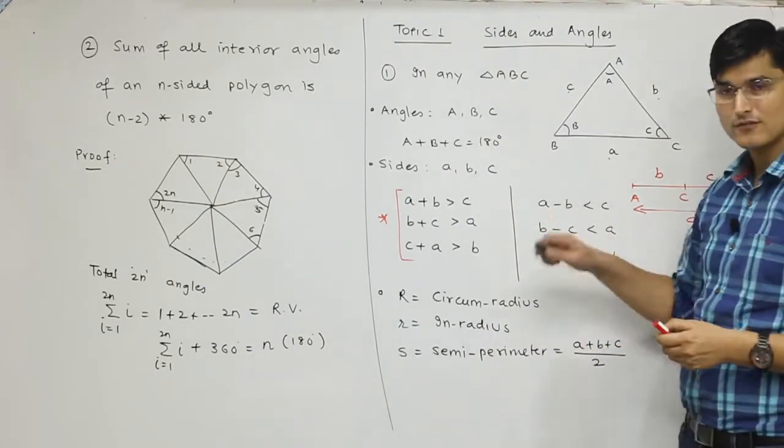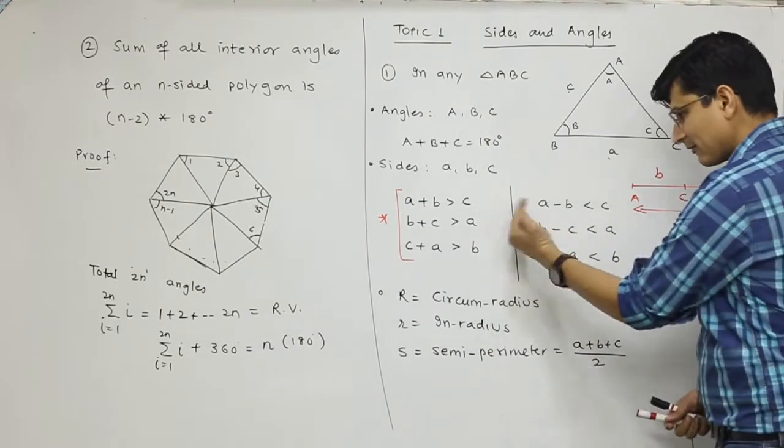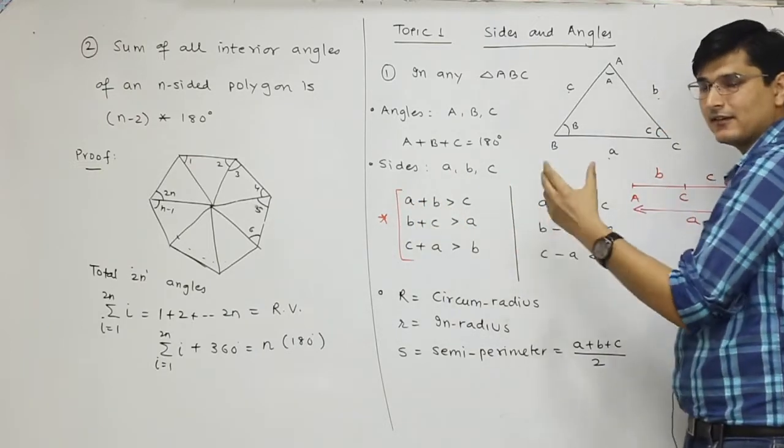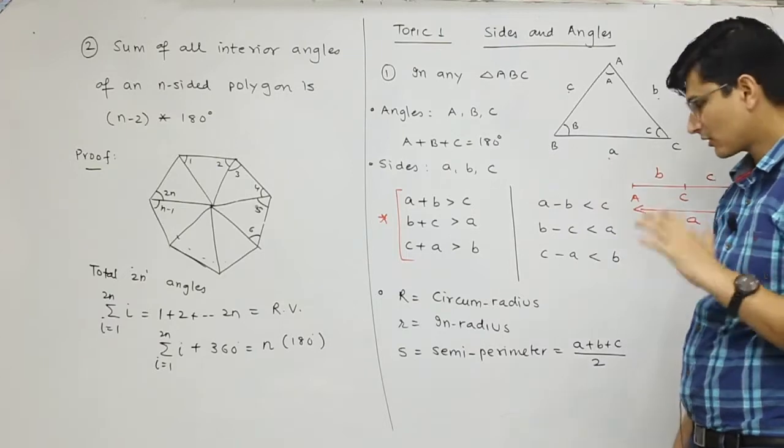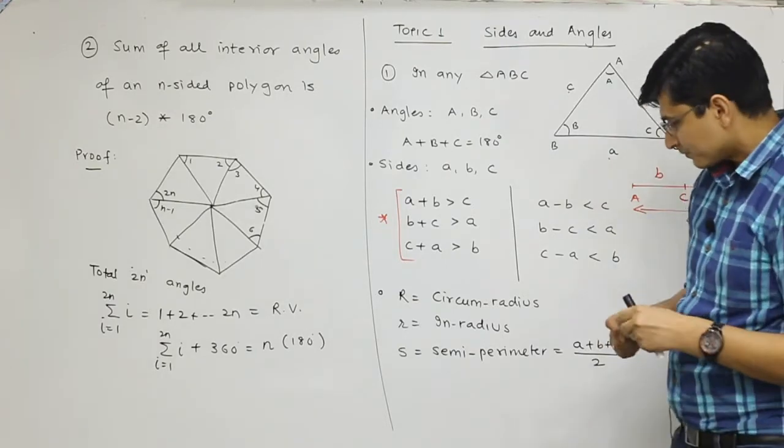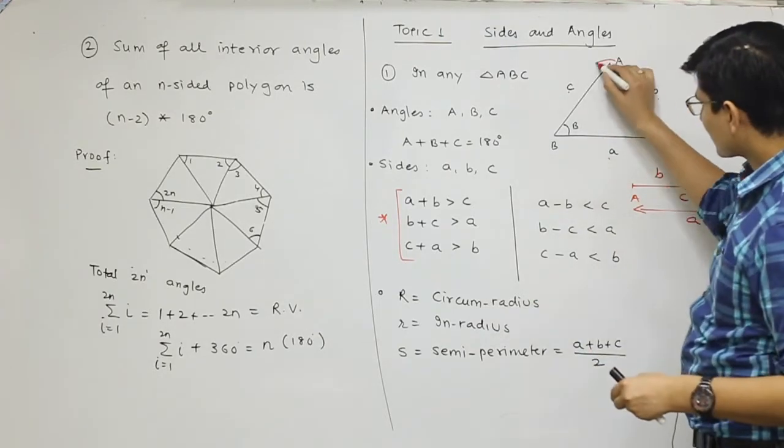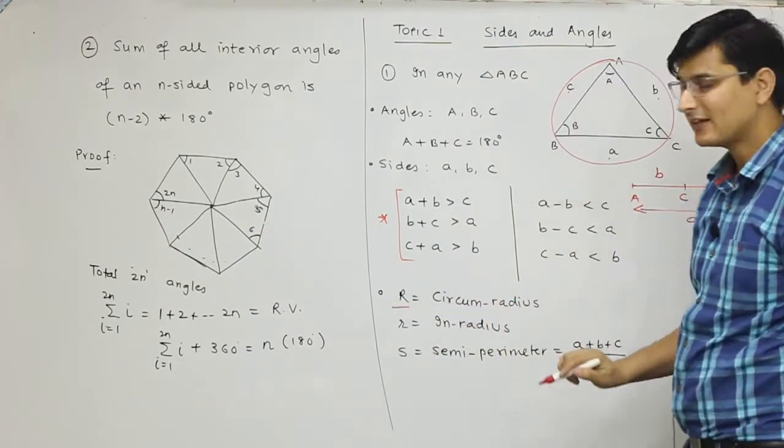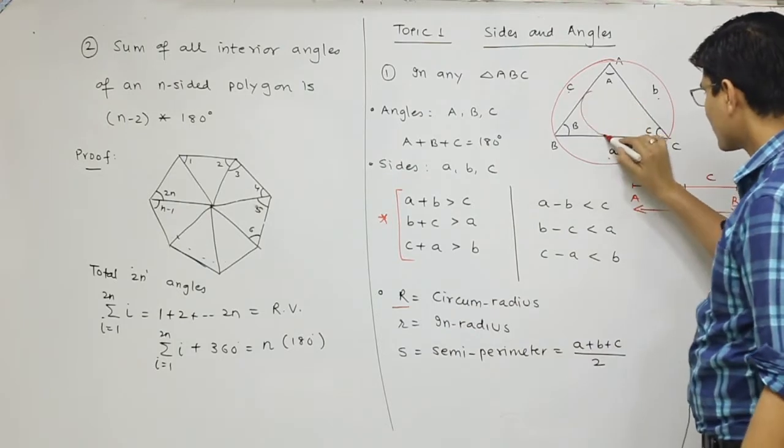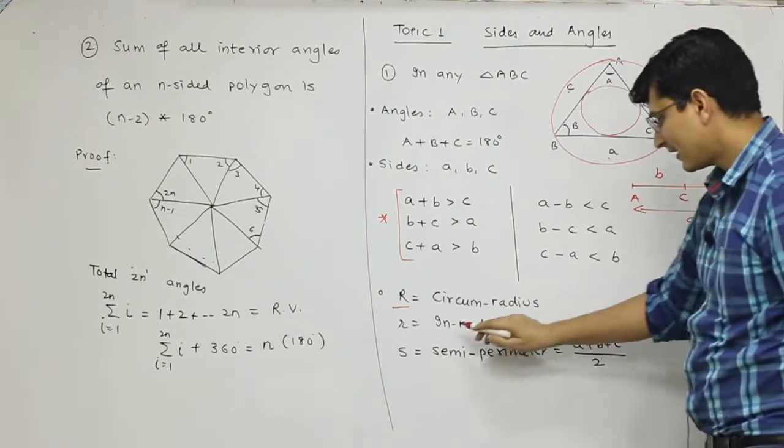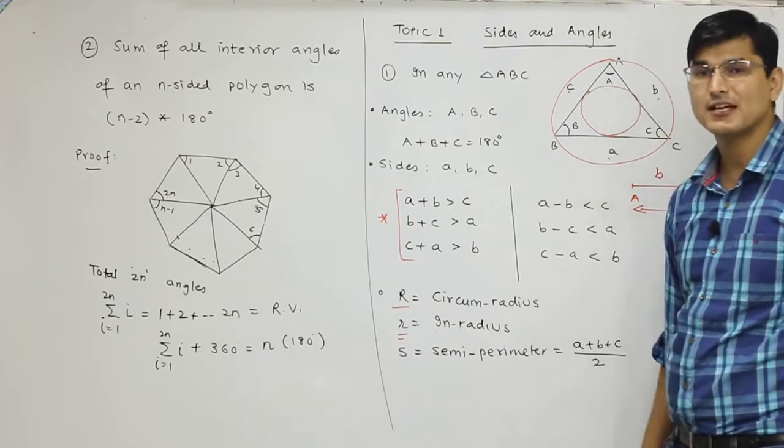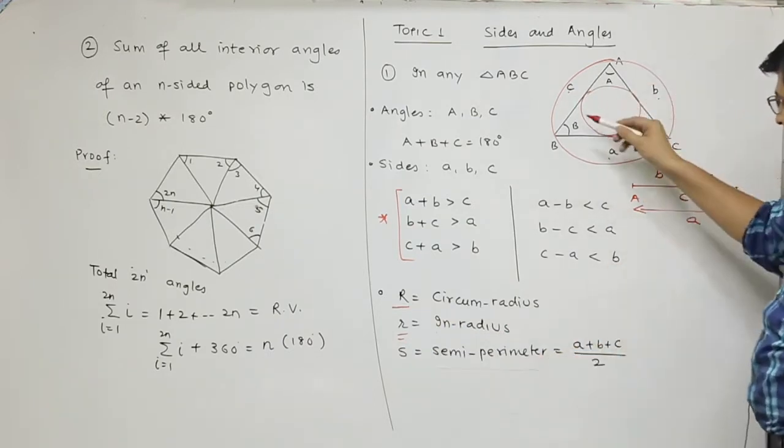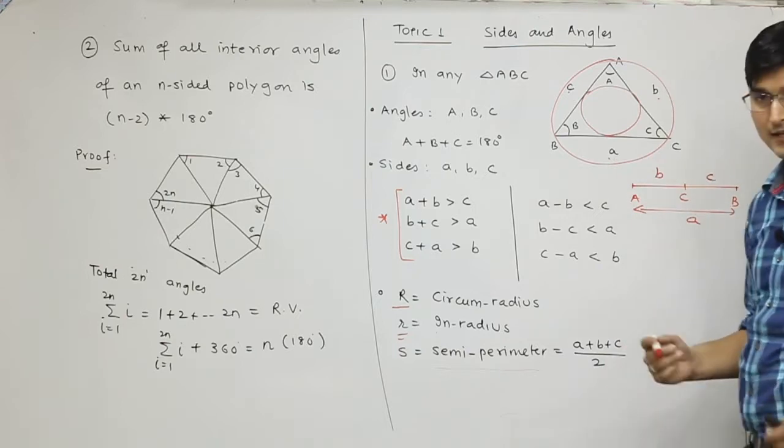The difference of the two sides is less than the third side. The circumcircle that passes through the triangle, its radius we represent by capital R. The incircle inside the triangle, its radius we represent by small r, called inradius. And semi-perimeter is the sum of 3 sides by 2: (a+b+c)/2.